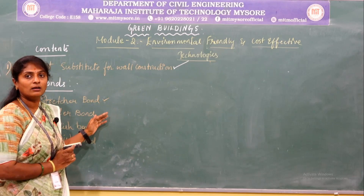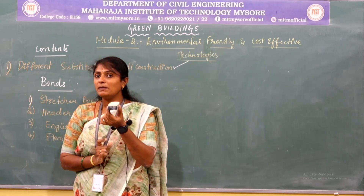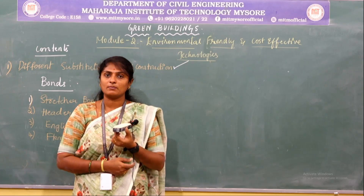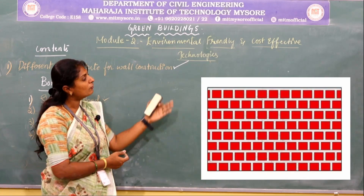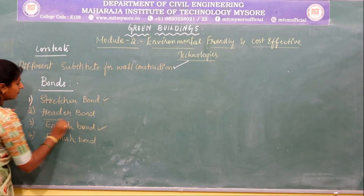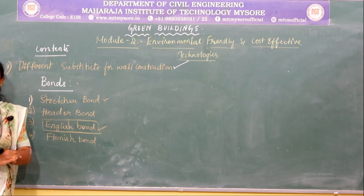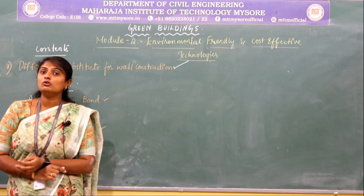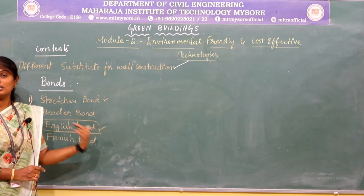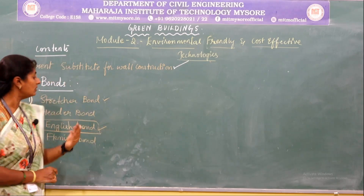Next is the header bond, a kind of bond in which all the bricks in each course are laid along their header face — that is, along their width. The figure shows the arrangement of bricks in header bond. Next is the English bond, the most common type of bond regularly used, and it is considered the strongest type used for almost all types of construction. This English bond can be considered for walls of any thickness and even for mass construction.